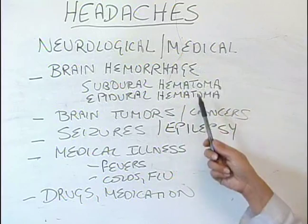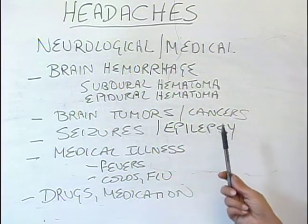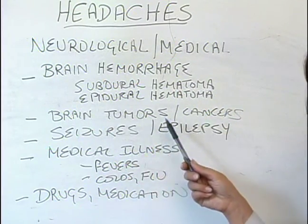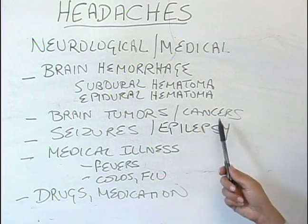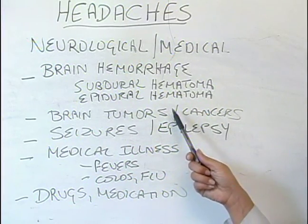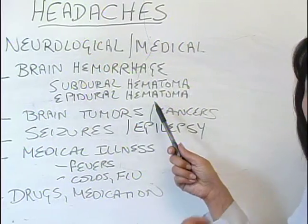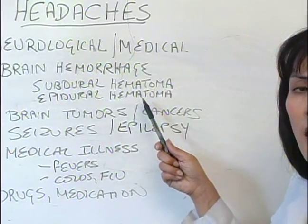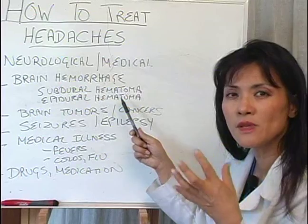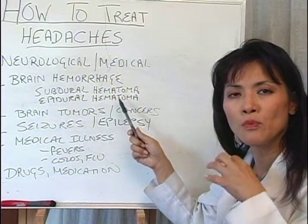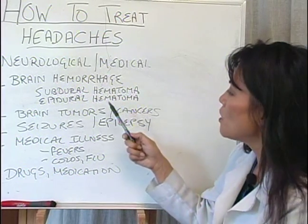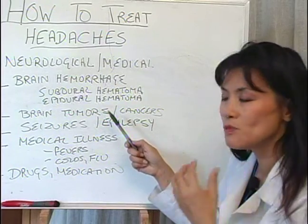Certain other neurological conditions that cause headaches could include people with brain tumors or brain cancers. These are usually accompanied by very strong associated signs and symptoms like blurred vision, nausea, and vomiting, and these symptoms would present themselves over a long period of time. So the headaches will accompany these symptoms.